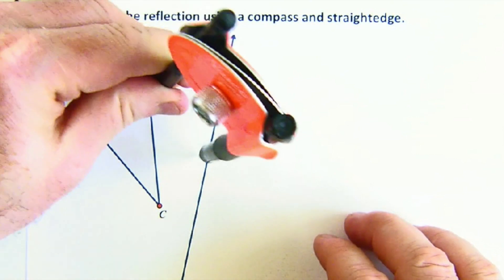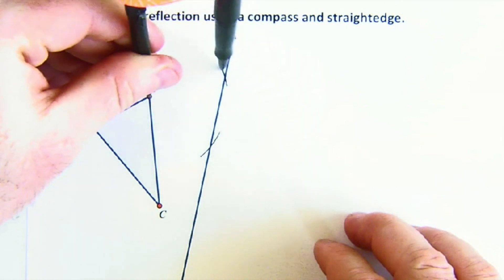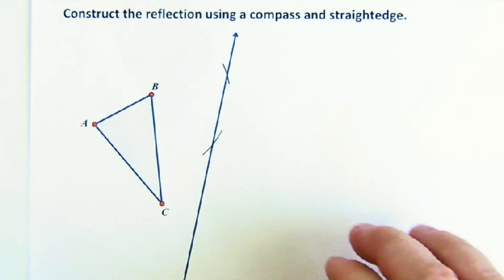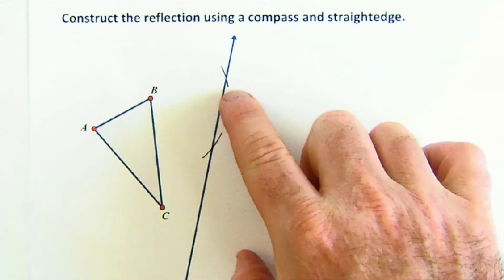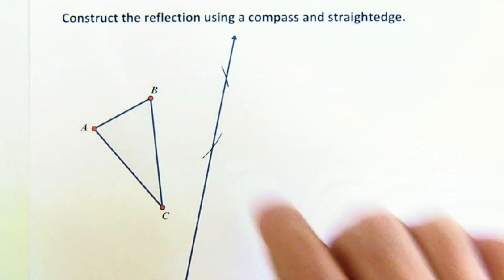and then swing your compass to intersect the line twice. This creates two locations that are equidistant from B,